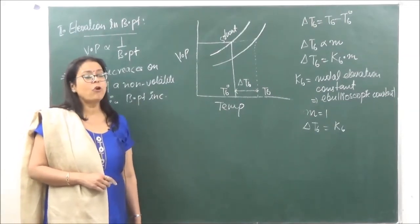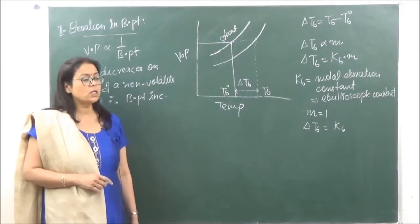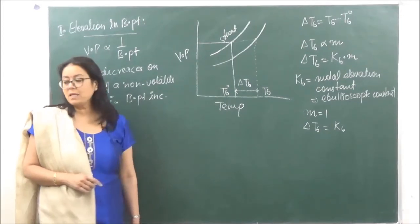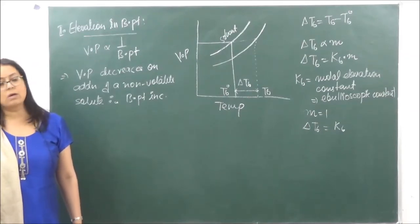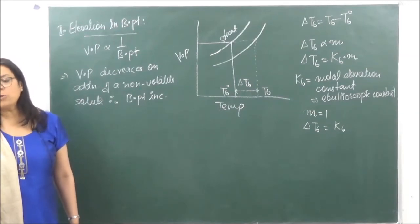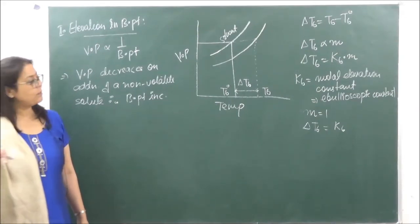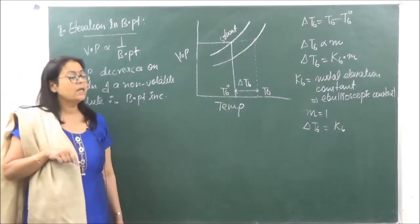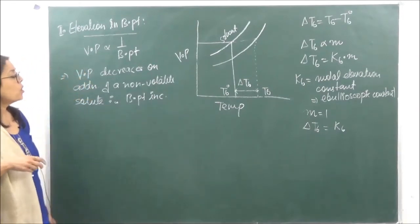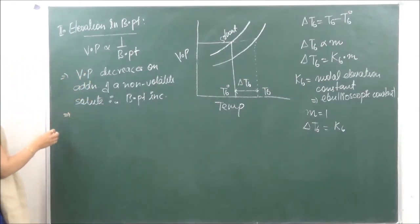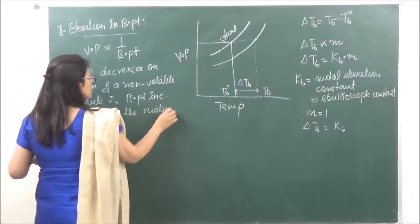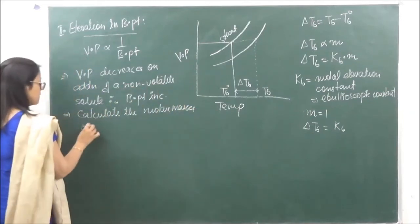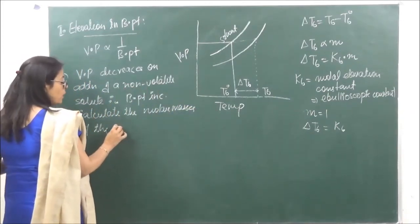Remember that Kb is different for every solvent. Water has its own Kb value and benzene has its own. The value of Kb will be given to you in the question — you do not need to memorize it. The application of elevation in boiling point is to calculate the molar masses of non-volatile solutes.